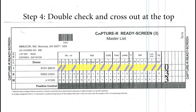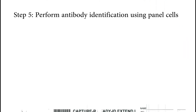Step 4: double check and cross out the antigens at the top. The antigens we are able to cross out are: big D, big C, little e, k, Pb, Jsa, S, Fyb, Jka, Lewis b, P1, little s, Lutheran b, and Xga. You can see that there are still a lot of antigens left that have not been crossed out.